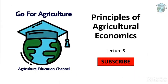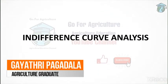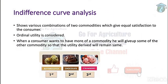Hello everyone, welcome back to our channel Go for Agriculture. In today's lecture 5 of Principles of Agricultural Economics, we'll see indifference curve analysis. Indifference curve analysis shows various combinations of two commodities which give equal satisfaction to the consumer. In this, ordinary utility is considered — where you choose a commodity just by comparing them, like choosing between butterscotch, chocolate, and strawberry ice cream without tasting them. That is called ordinary utility.